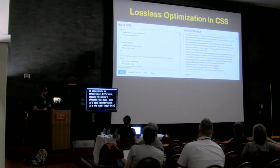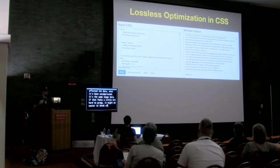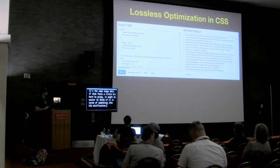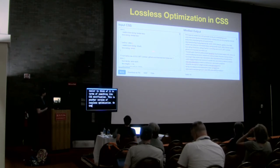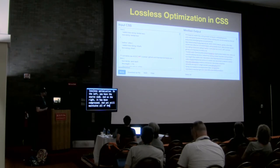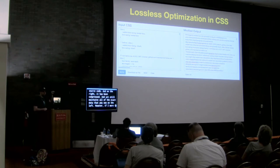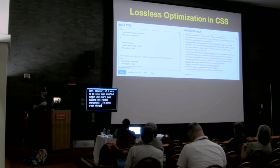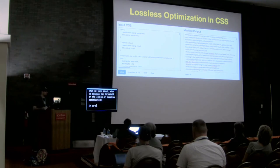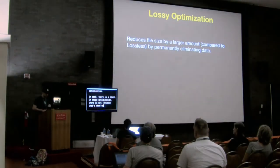If that feels hard to grasp, think of it in terms of CSS minification — another version of lossless optimization. On the left you have the source code; on the right it has been compressed and yet still maintains all of the exact data. However, if you were to go into that minified output and start pulling out random characters, you're going to break things. That's what we talk about when we discuss the threshold or limits of lossless optimization. In code there is a limit; in image optimization there's none — because that's when we get into lossy optimization.